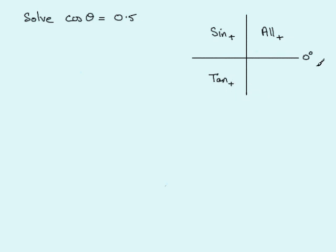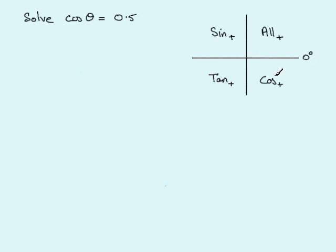From 270 to 360 degrees the cosine ratio (cos for short) was positive. In this example the cosine is a positive number 0.5, so we're only interested in angles between 0 and 90 degrees and 270 to 360 degrees — that's the first quadrant and the fourth quadrant.